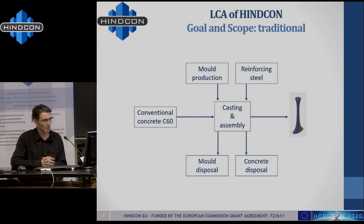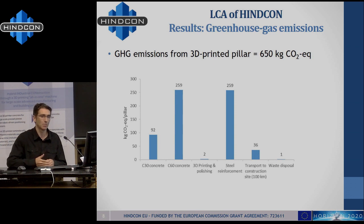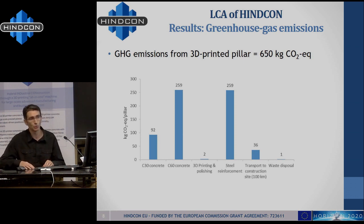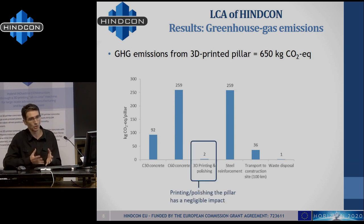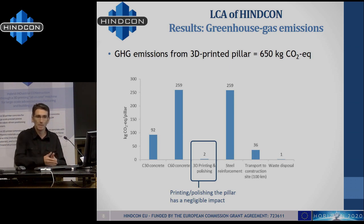I'll take you through the results. I'm only going to talk about emissions of greenhouse gases, and the unit of analysis here is producing one pillar. To produce one pillar, the emissions we have quantified would be 650 kilograms of CO2 equivalent. In the graph you can see how different activities in the production of the 3D printed pillar contribute to those 650 kilograms. It's very interesting to see that the 3D printing activity — the part of the life cycle involving the Hincone machine — has a very small part of the impact. Only around 2 kilos of the 650 kg of CO2 come from operating the machine and its amortisation.